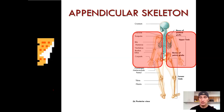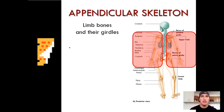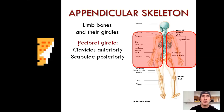Let's start with the appendicular skeleton. This is our map guiding us through this whole skeletal system tour. The appendicular skeleton refers to limb bones and their girdles. If we start superiorly with the pectoral girdle...